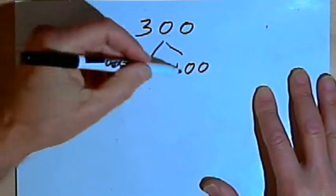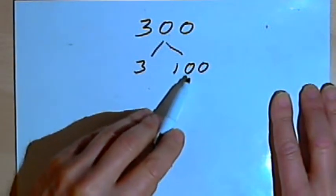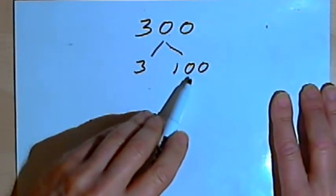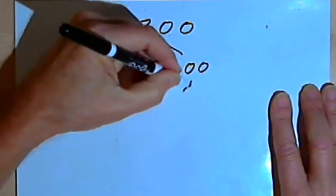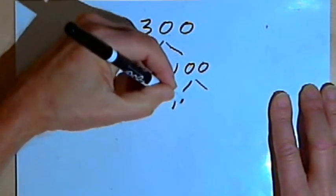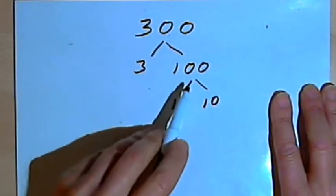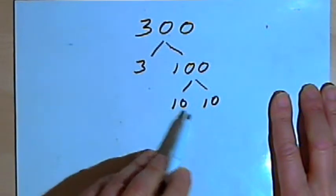Okay, so now I've got two factors, but 100 is not a prime factor. So I want to break 100 down. Now it seems like an obvious way to break 100 down is into 10 times 10. So I'll add two more branches underneath this 100 and put a 10 and a 10.